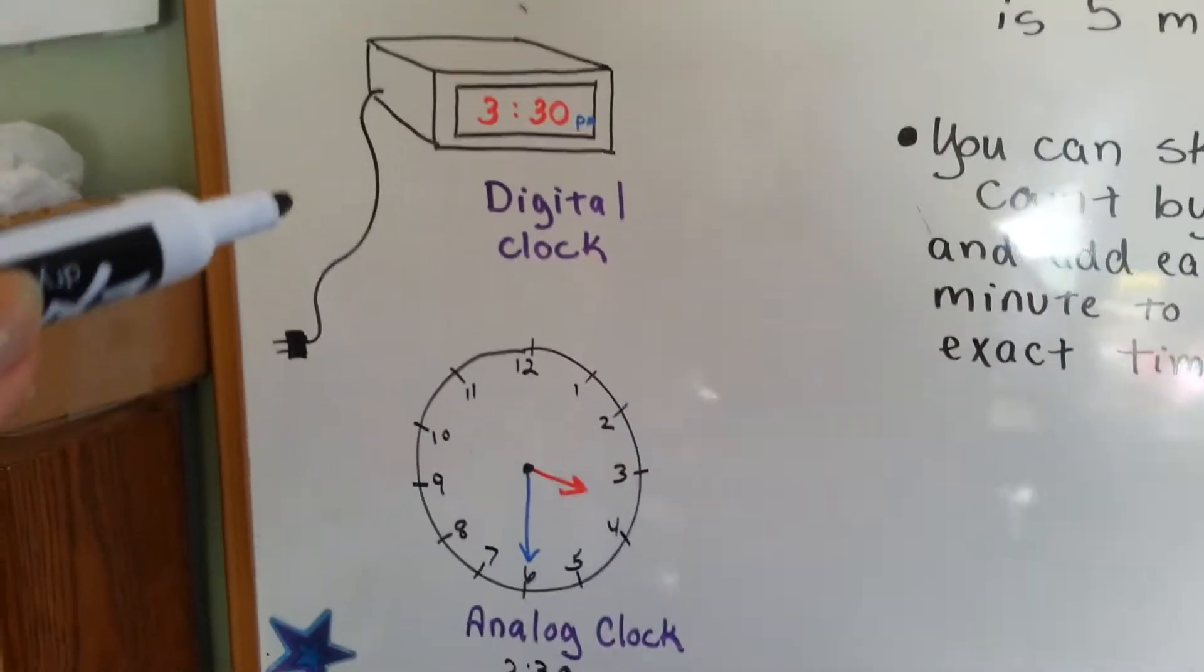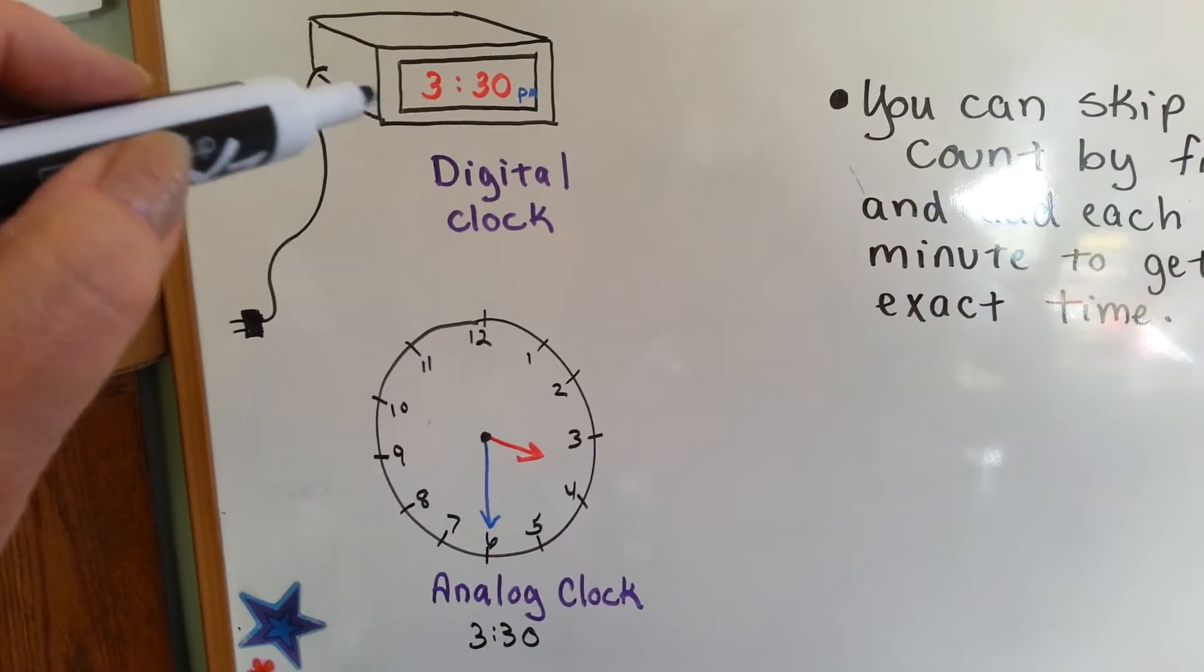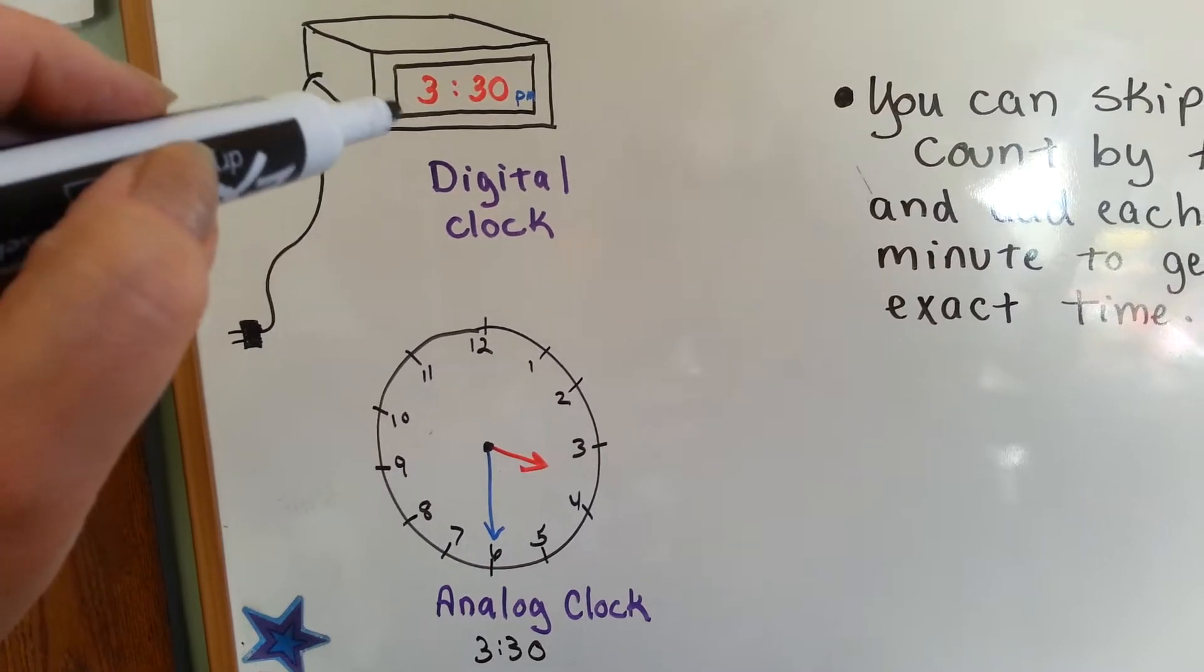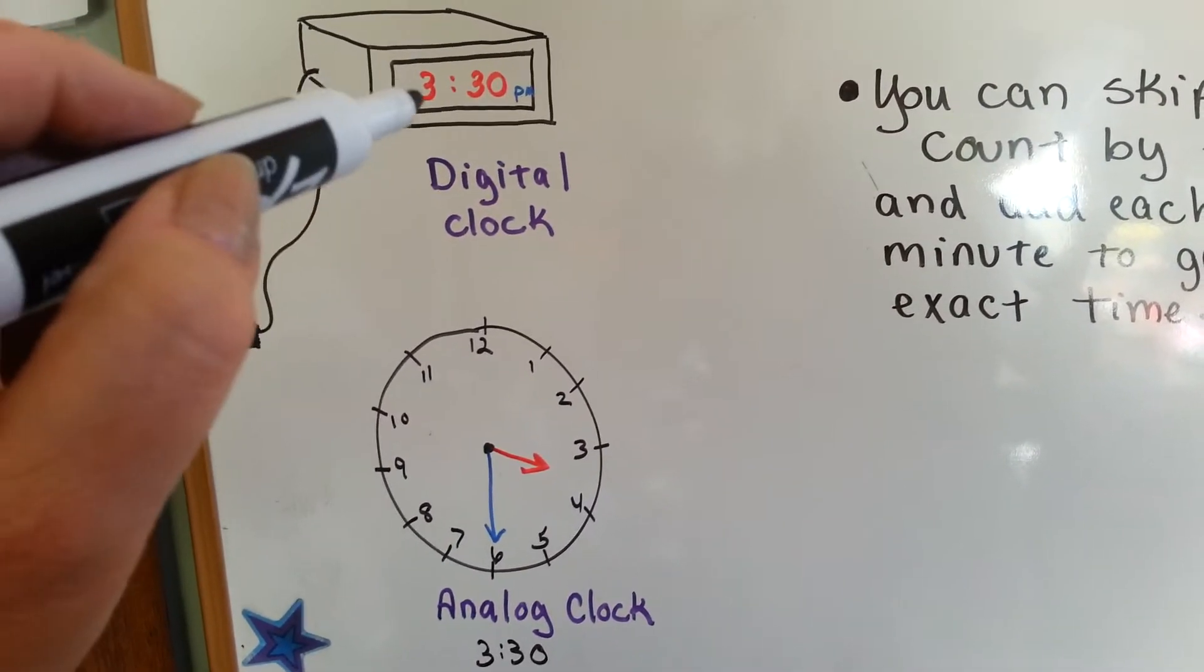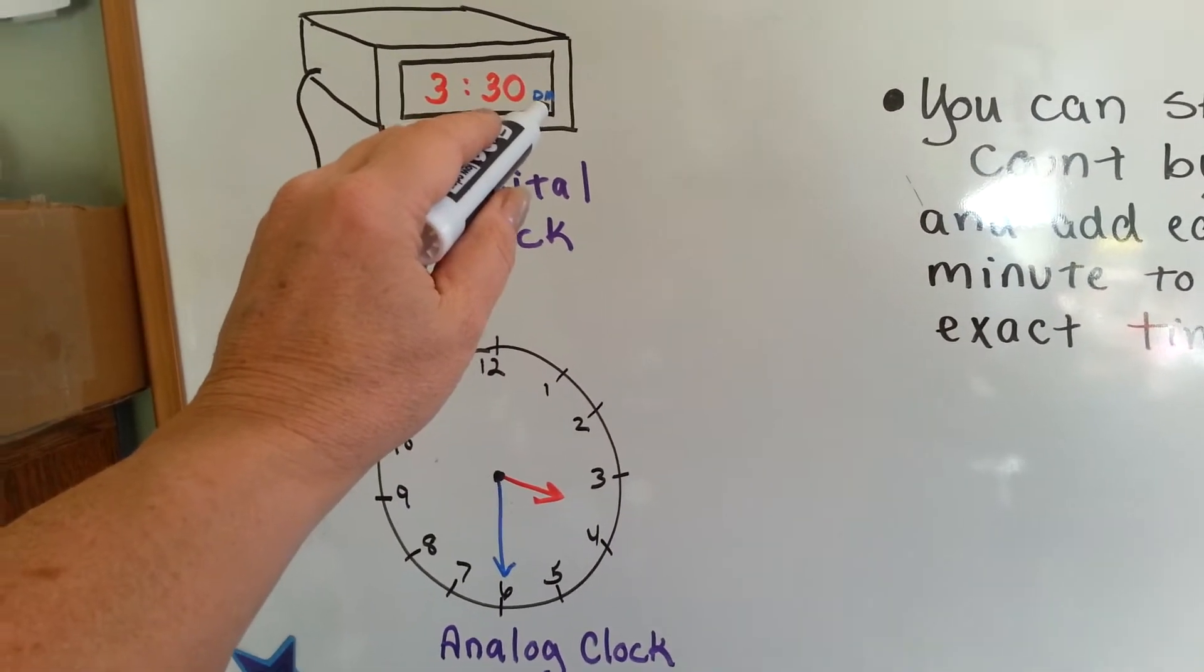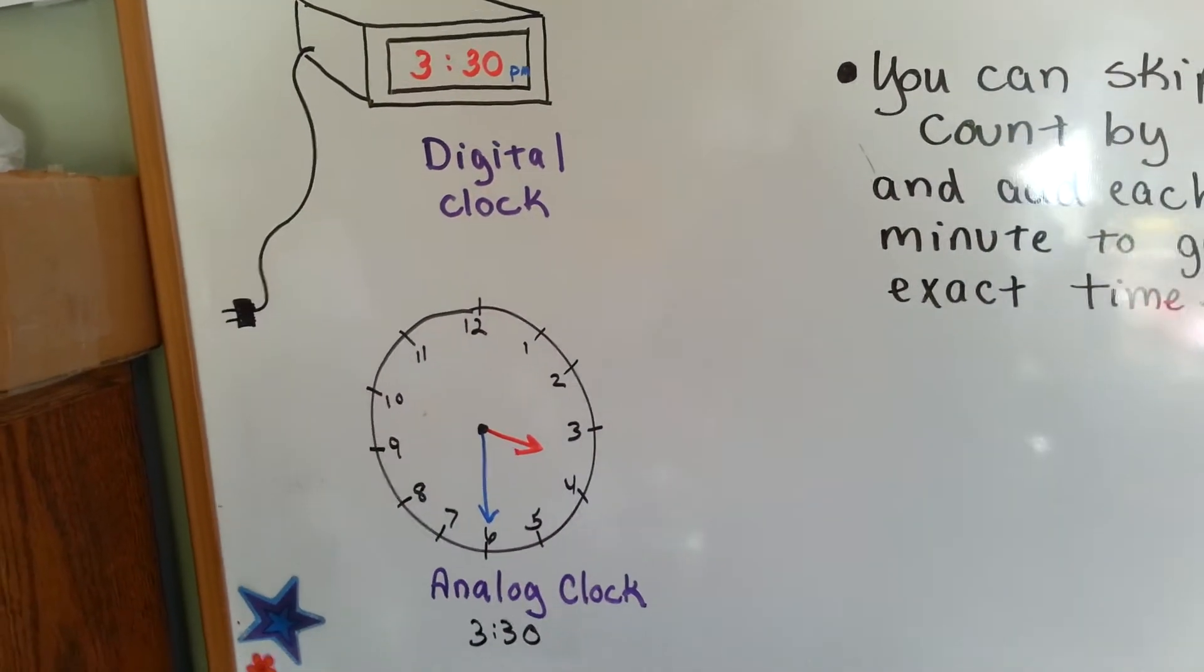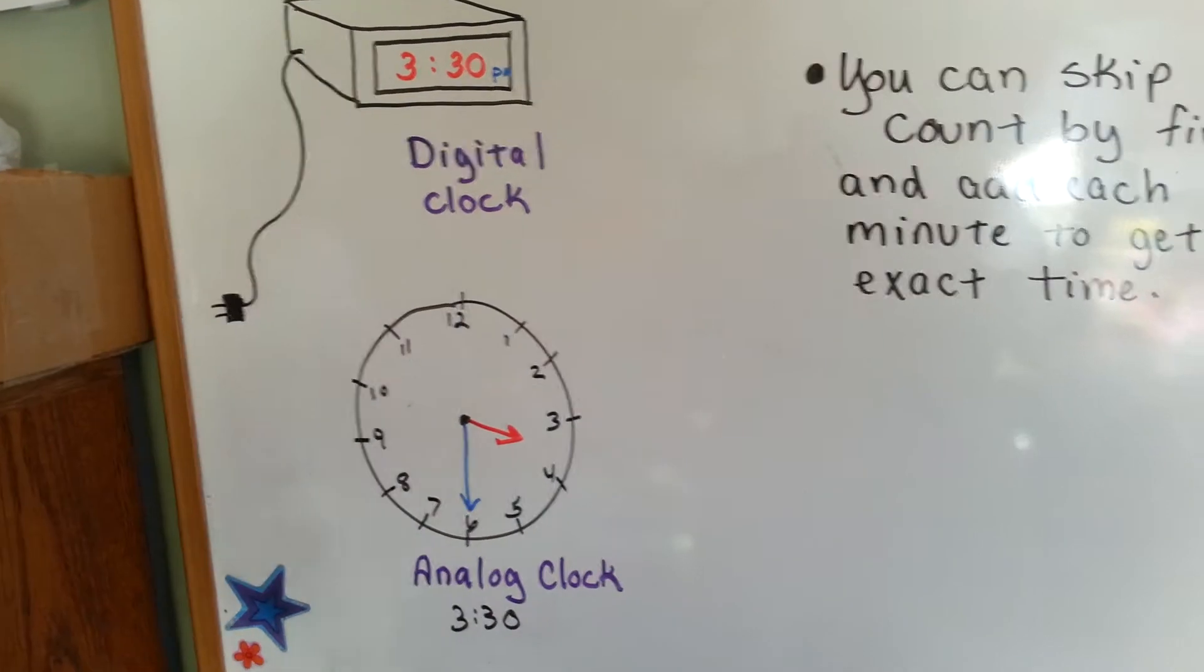There's two different types of clocks. There's a clock that plugs into the wall and it's electric and it's a digital clock. And it tells you the time exactly as we read it. 3:30. And it might even have a little a.m. or p.m. to tell you if it's afternoon or morning off on the corner. Sometimes it'll just have a little dot to tell you that it's p.m.